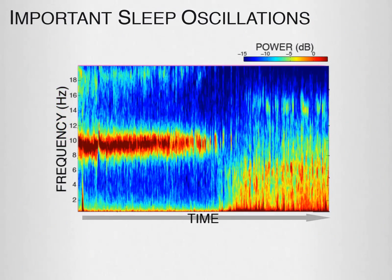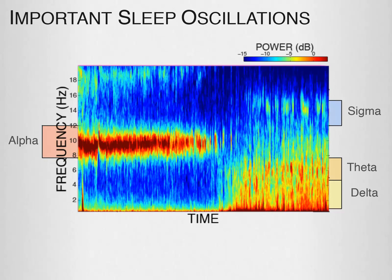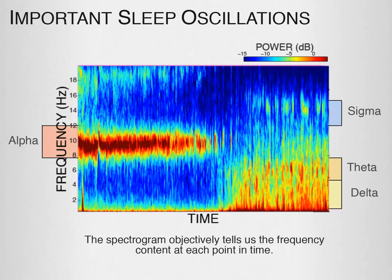In the spectrogram, the x-axis is time, the y-axis is frequency measured in hertz, and the color is power. Whereas in traditional time domain scoring we look for an 8-12 Hz oscillation in the waveforms to indicate the presence of alpha waves, the spectrogram reveals a strong band of power in the 8-12 Hz range. Likewise, power in other bands such as delta, theta, and sigma can be determined in the spectrogram. While it takes skill and guesswork to accurately identify a particular frequency by eye within an EEG waveform, the spectrogram objectively tells us the frequency content at each point in time.